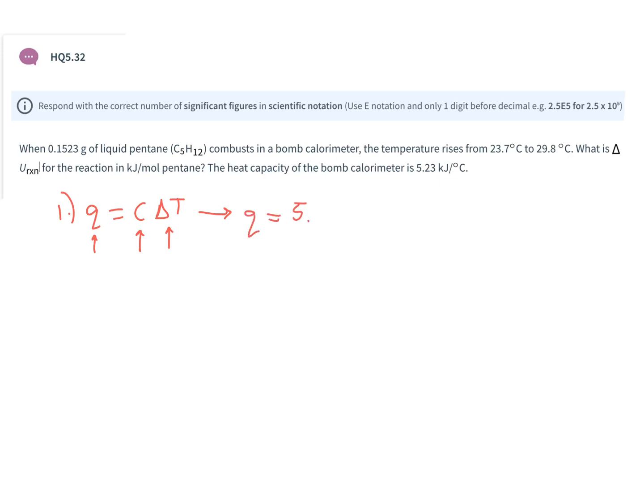My heat capacity for the calorimeter is 5.23 kilojoules per degree Celsius. And my temperature change, I would get my temperature change right here. So I go from 23 degrees to 29 degrees, so that's a change of 6.1 degrees Celsius.